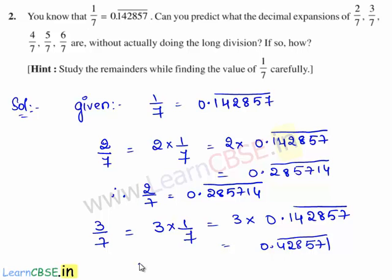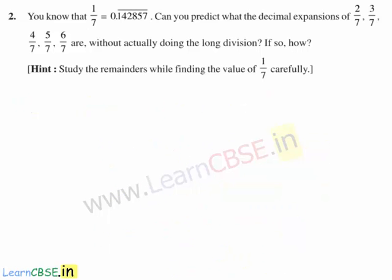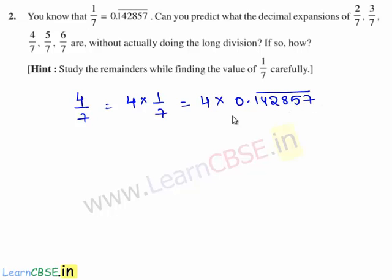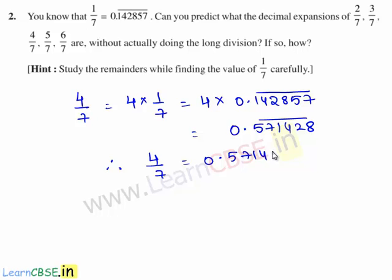Now, the decimal expansion of 4 by 7 is obtained by multiplying 4 with 1 by 7. That is, we multiply the decimal expansion of 1 by 7 with 4. That is, 4 times 0.142857 bar. This gives 0.571428 bar. Therefore, the decimal expansion of 4 by 7 is equal to 0.571428 bar.